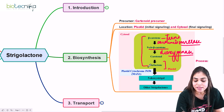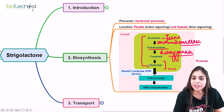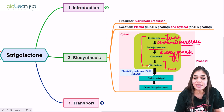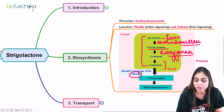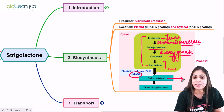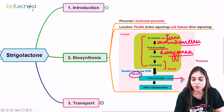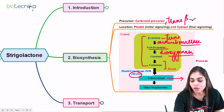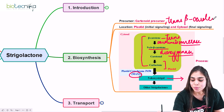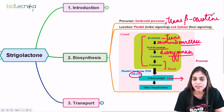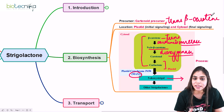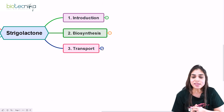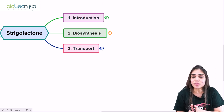The initial steps of synthesis take place in the plastid. Once this intermediate carlactone is formed, it diffuses into the cytosol, where it is acted upon by the enzyme MAX1, which converts it into 5-deoxystrigol. This 5-deoxystrigol is the precursor molecule for the synthesis of different types of strigolactones in the plant body. So the initial steps occur in the plastid and the final step is completed in the cytosol.